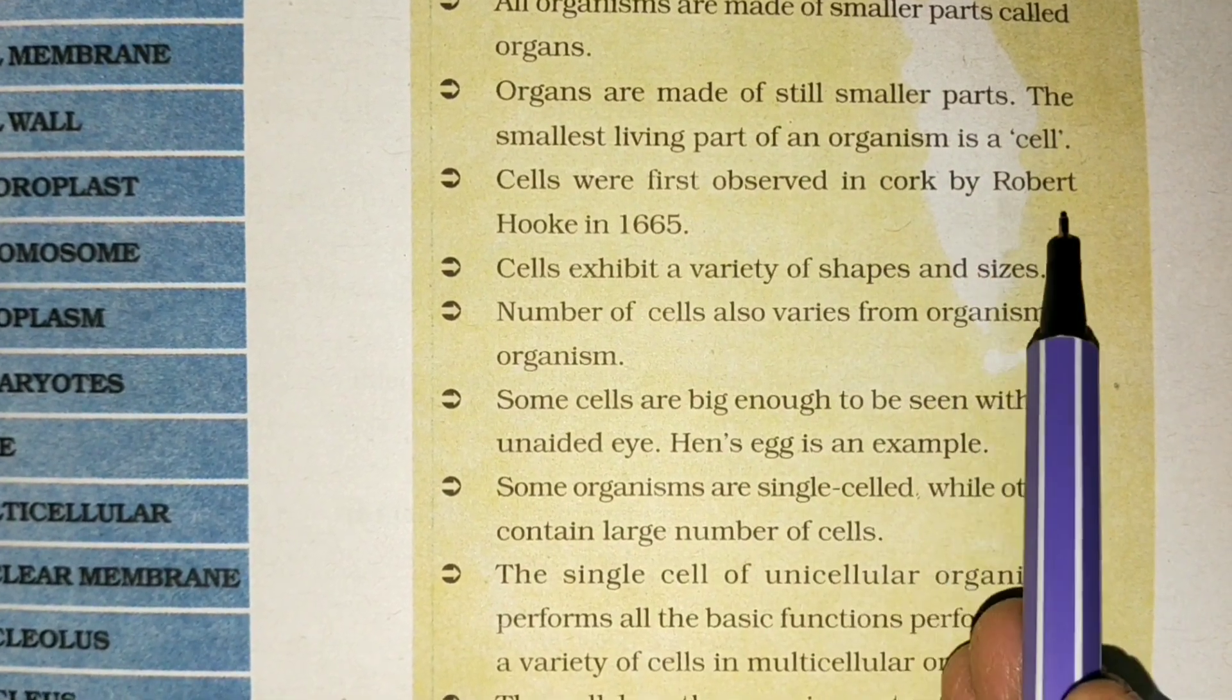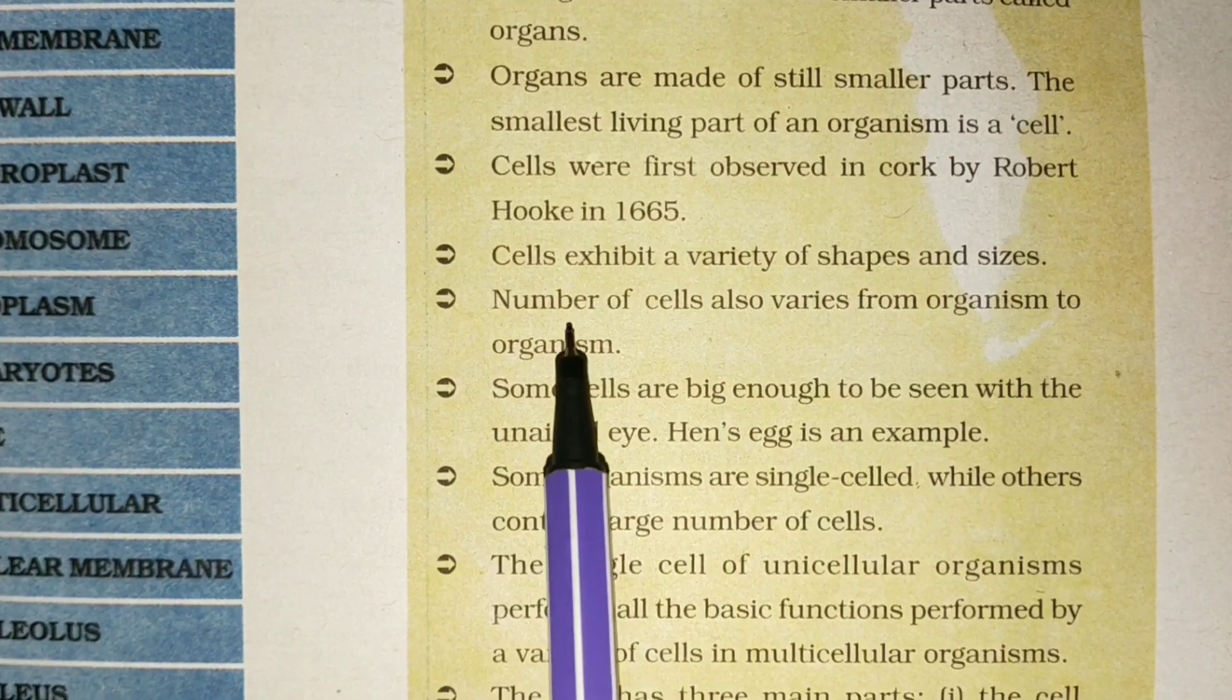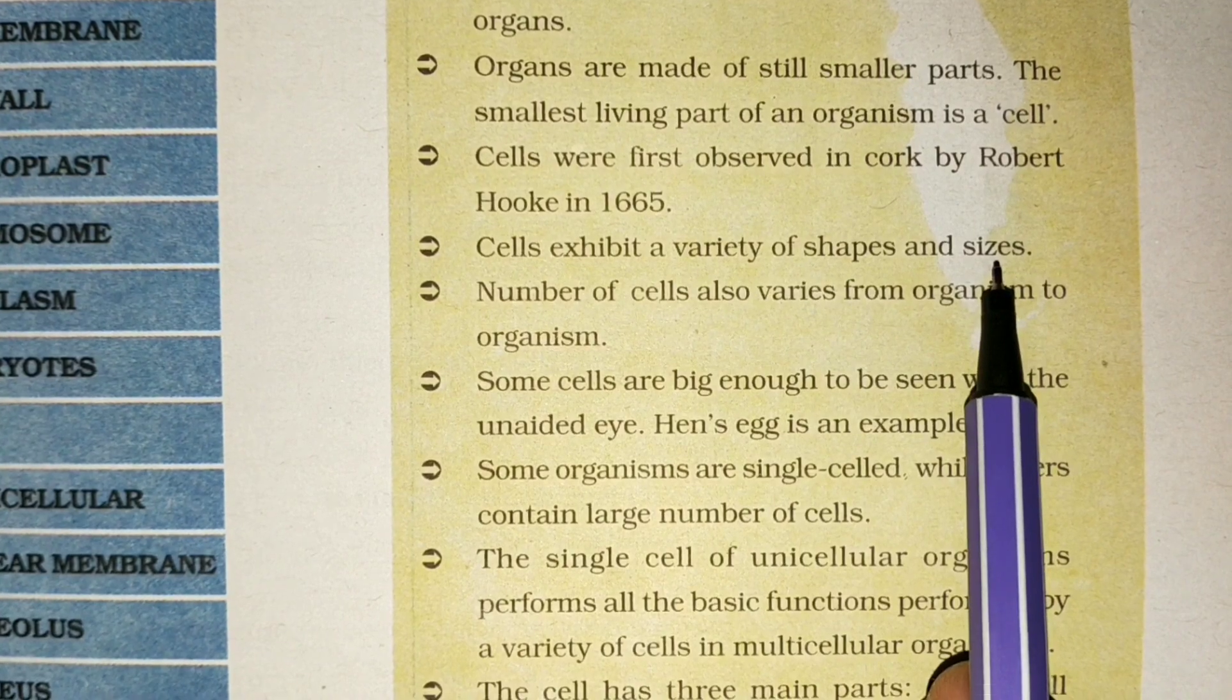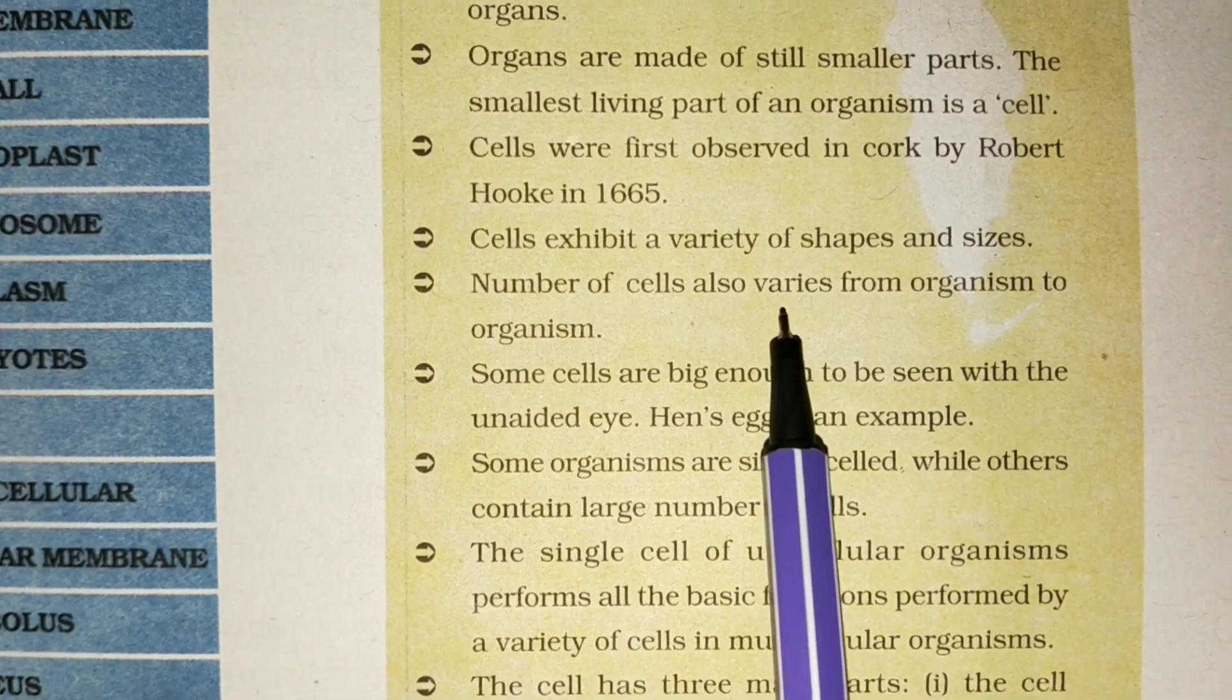in cork by Robert Hooke in 1665. Cells exhibit a variety of shapes and sizes. Number of cells also varies